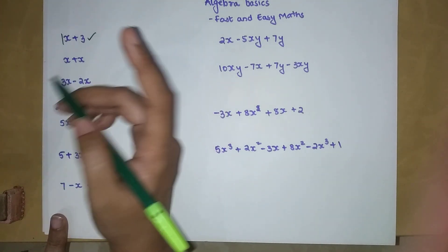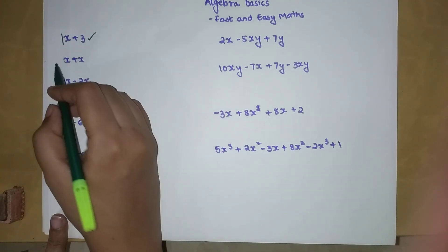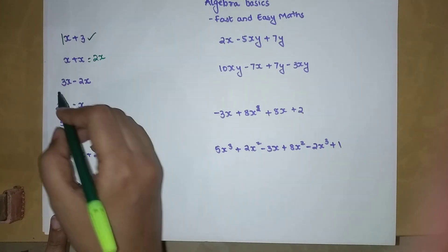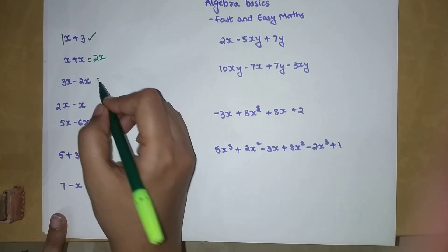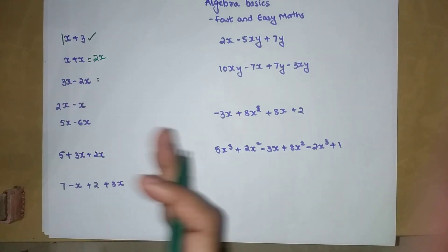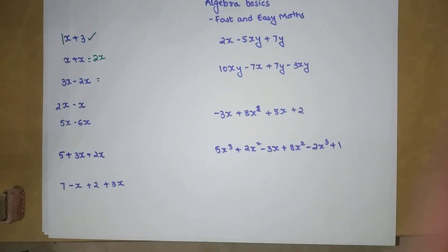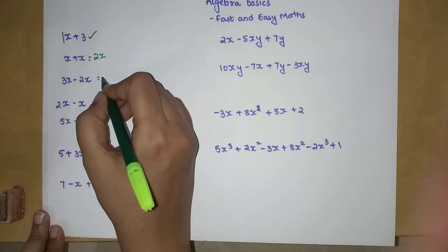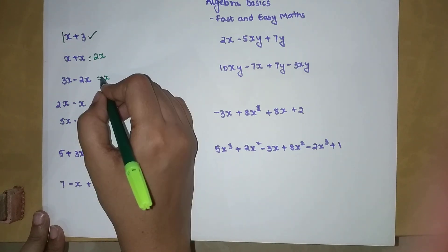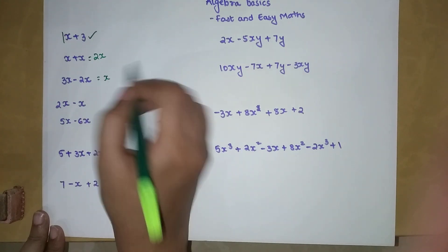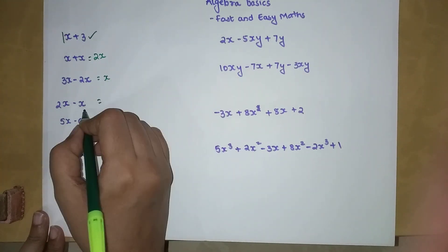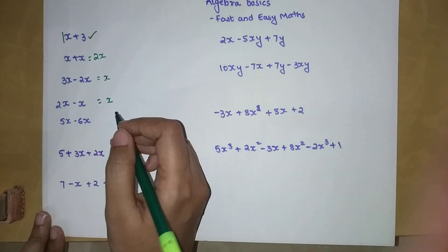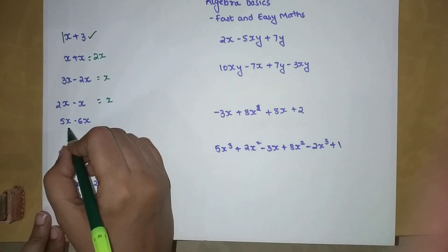Here we have x plus x — like I said, a single x is taken as 1x, so 1x plus 1x gives you 2x. Now 3x minus 2x: when subtracting, just follow the same rules — 3 minus 2 gives you 1, so the answer is 1x, or we can just write x.